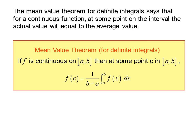If f is continuous on closed interval a to b, then at some point c in closed interval a to b, f of c equals 1 over b minus a times the integral from a to b of f of x dx.